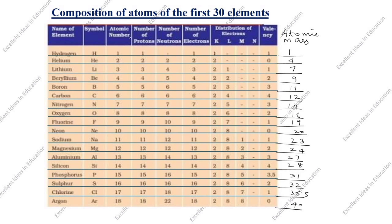You can see here the atomic number of hydrogen is 1 and the atomic number of argon is 18. Atomic number equals number of protons equals number of electrons. If atomic number is 1, the number of protons is 1 and number of electrons is also 1. You can see hydrogen: atomic number is 1, proton is 1, electron is also 1.